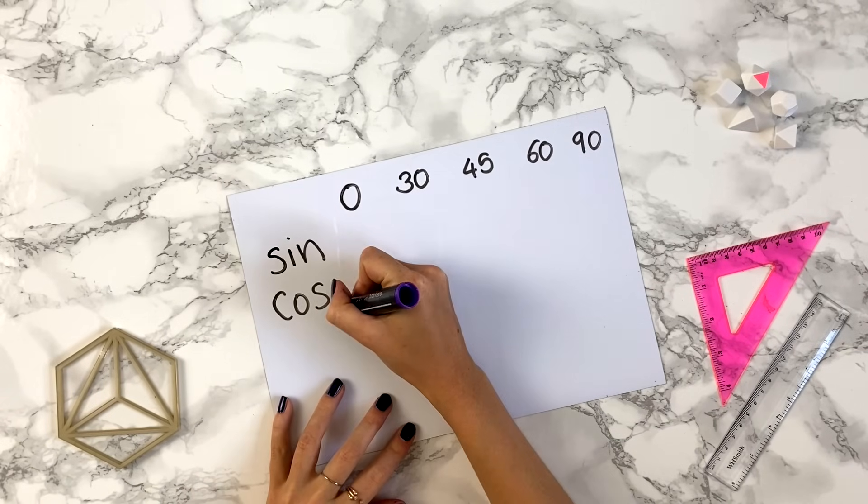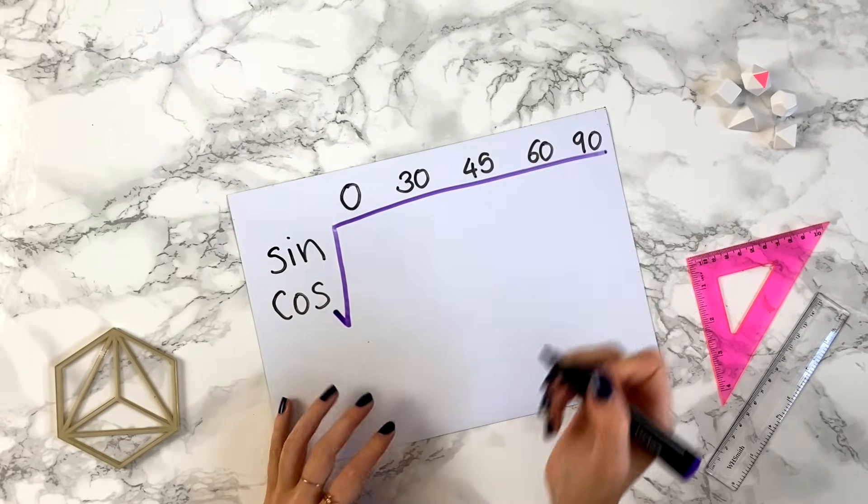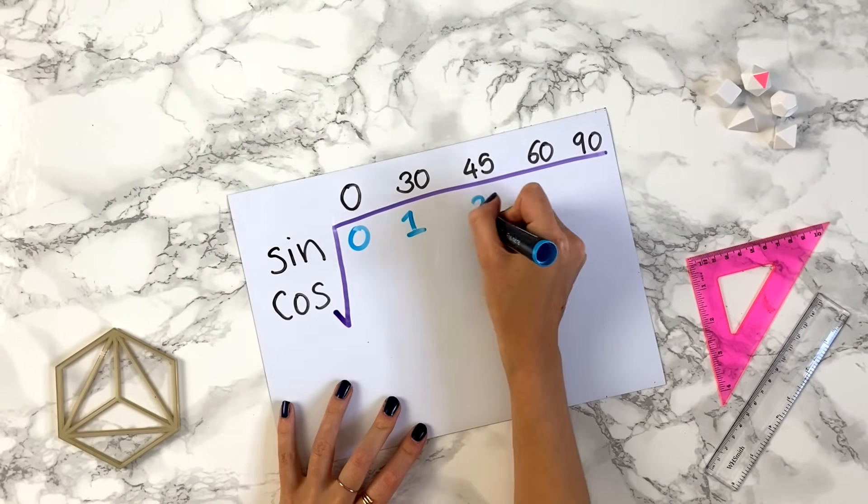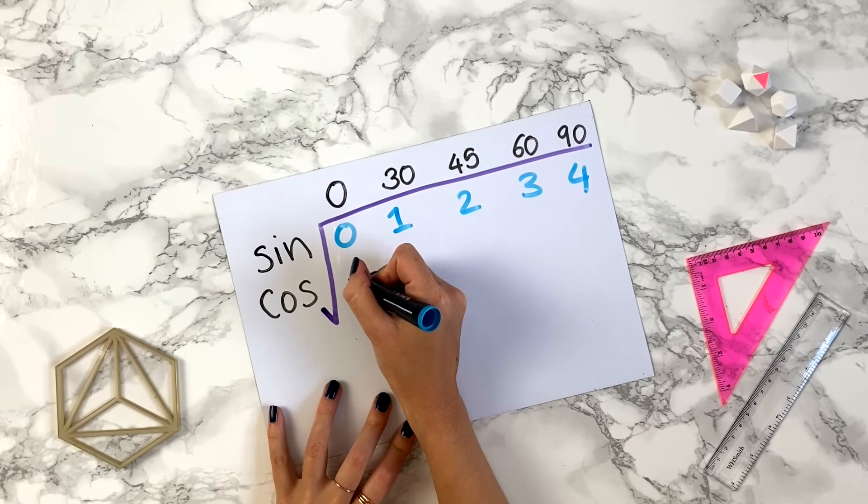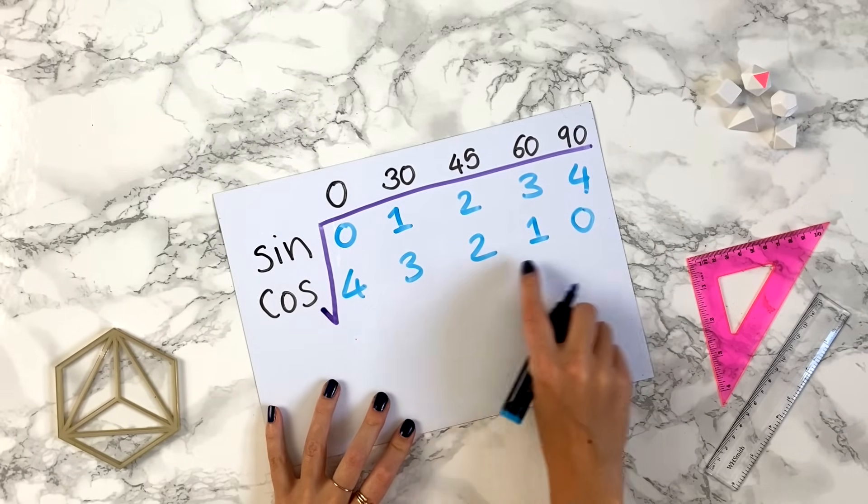You then draw a really big square root sign like this. Inside the square root you write at the top 0, 1, 2, 3, 4, and below that you reverse it. So you write 4, 3, 2, 1, 0.